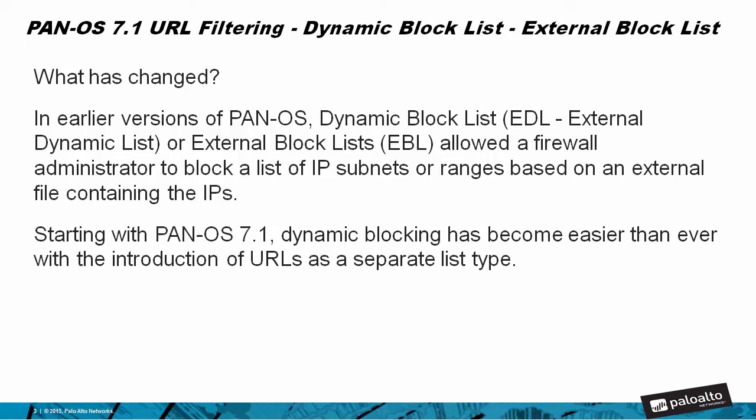Starting with PanOS version 7.1, dynamic blocking has become easier than ever with the introduction of URLs as a separate list type.